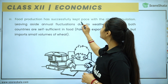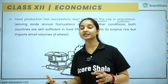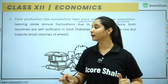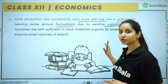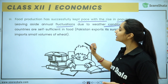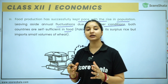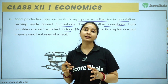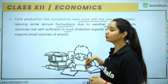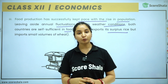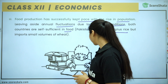Food production has successfully kept pace with their rise in population. As population has increased in both countries, food production has also increased. Leaving aside annual fluctuation due to weather conditions, both countries are self-sufficient in food. Pakistan exports its surplus rice but imports small volumes of wheat.